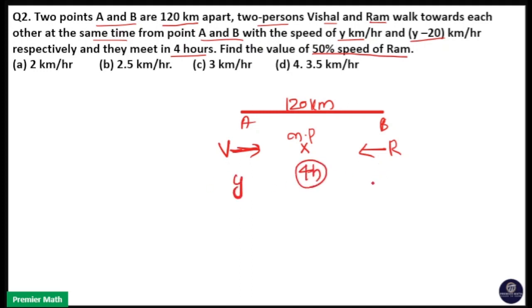Speed of Vishal is Y km per hour and speed of Ram is Y minus 20 km per hour. So we need to find out 50% speed of Ram. Here, they both combined travel 120 km.